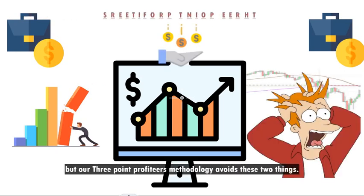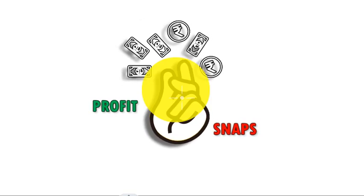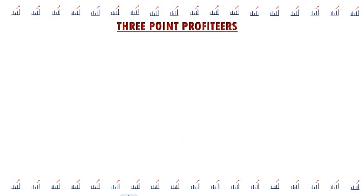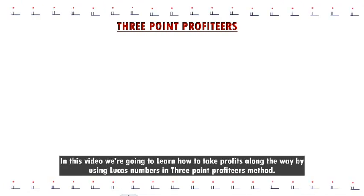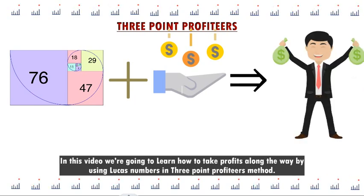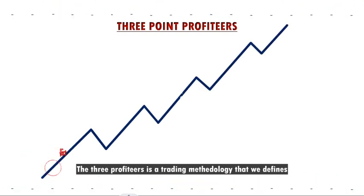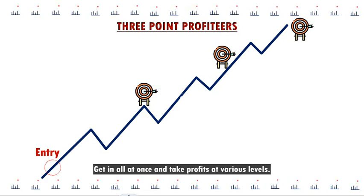Our three-point profiteers methodology avoids these two things. Hello traders, this is Shivander. Welcome to Profit Snaps. In this video we're going to learn how to take profits along the way by using Lucas numbers and the three-point profiteers method. The three profiteers is a trading methodology where we define and skip it all at once and take profits at various levels.